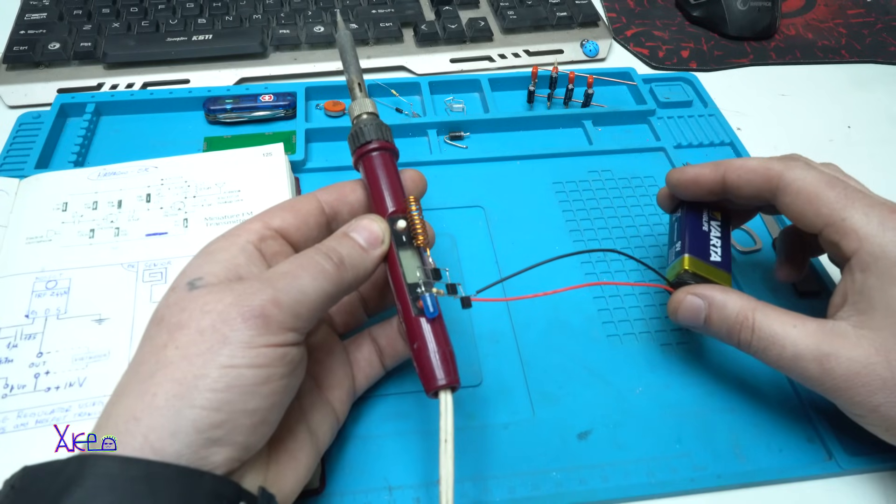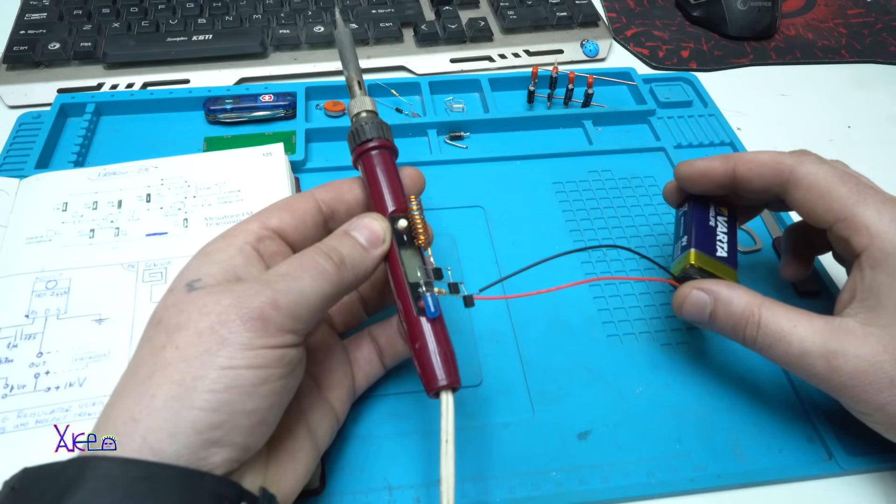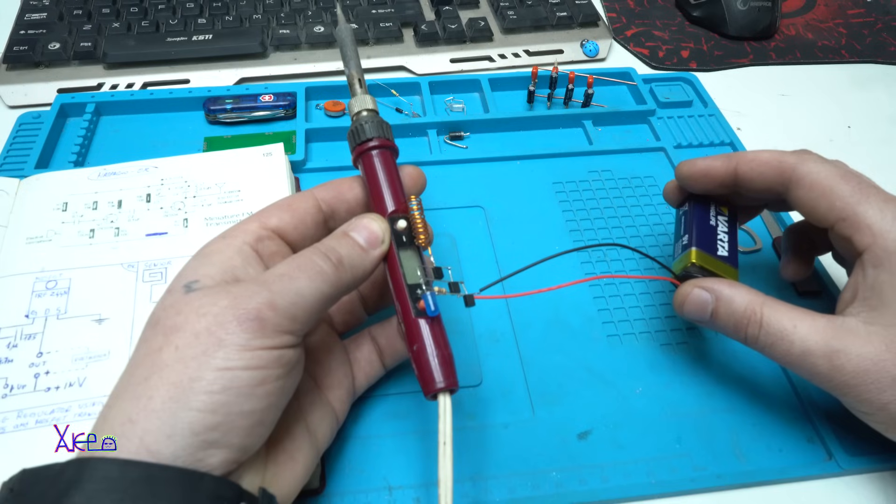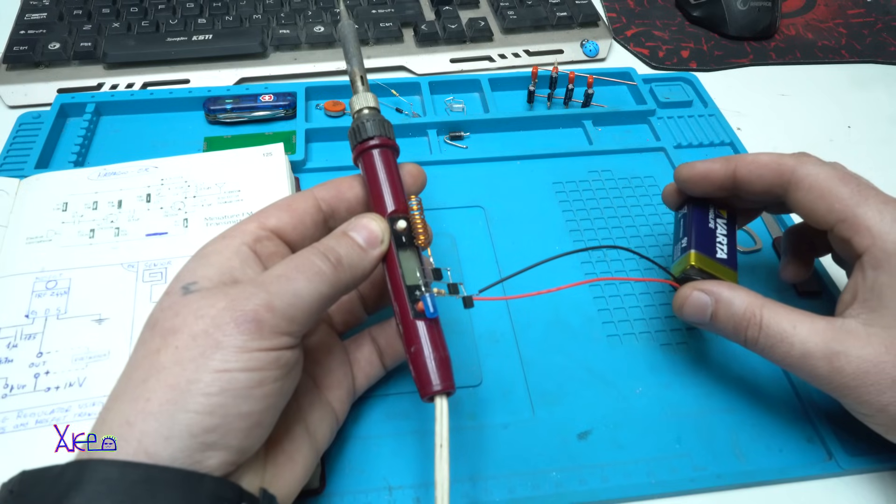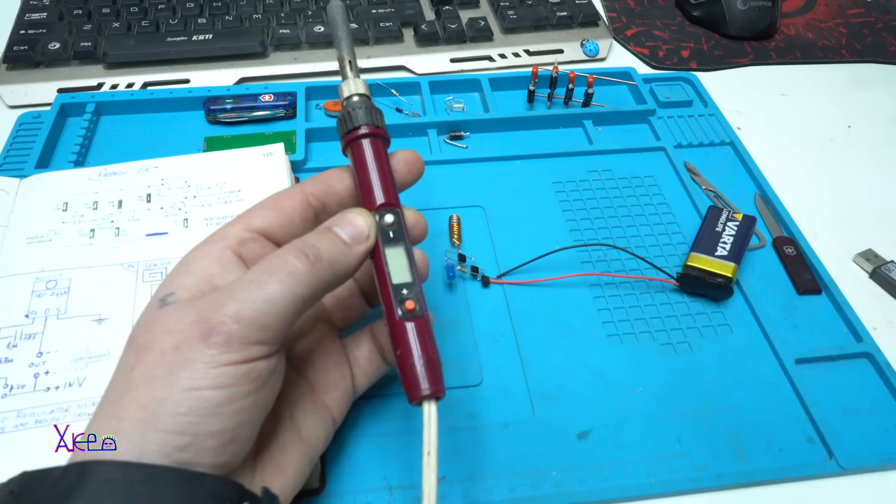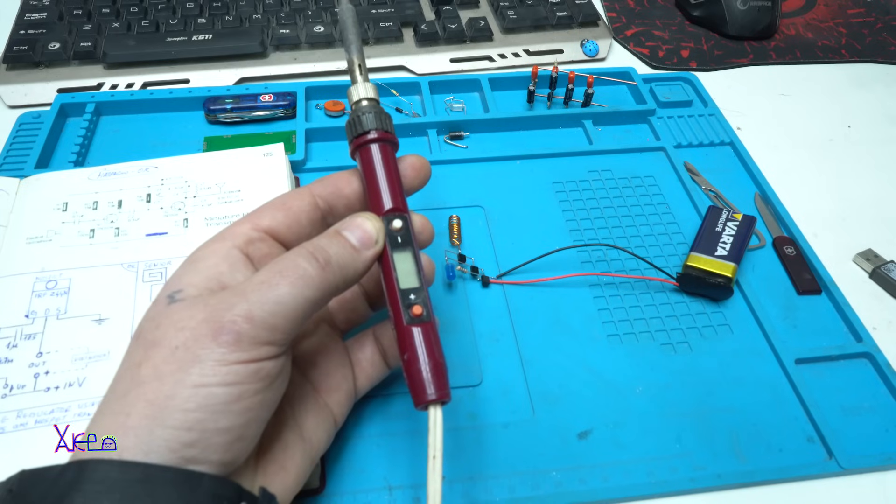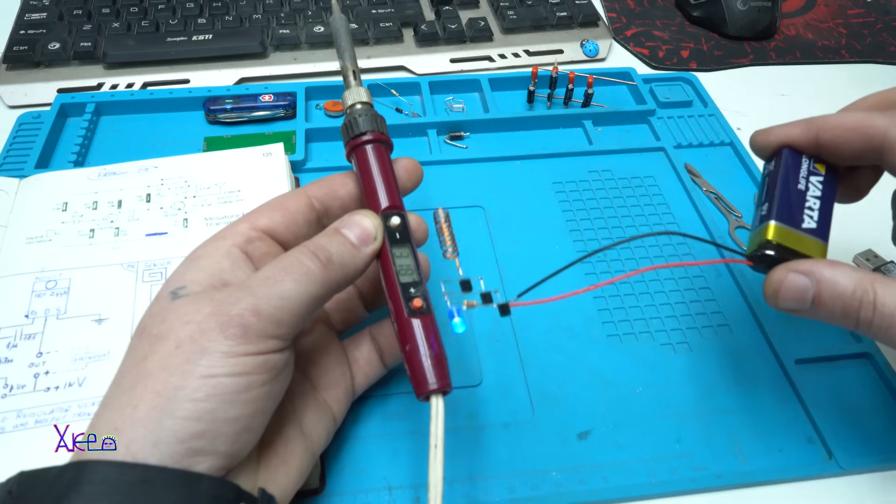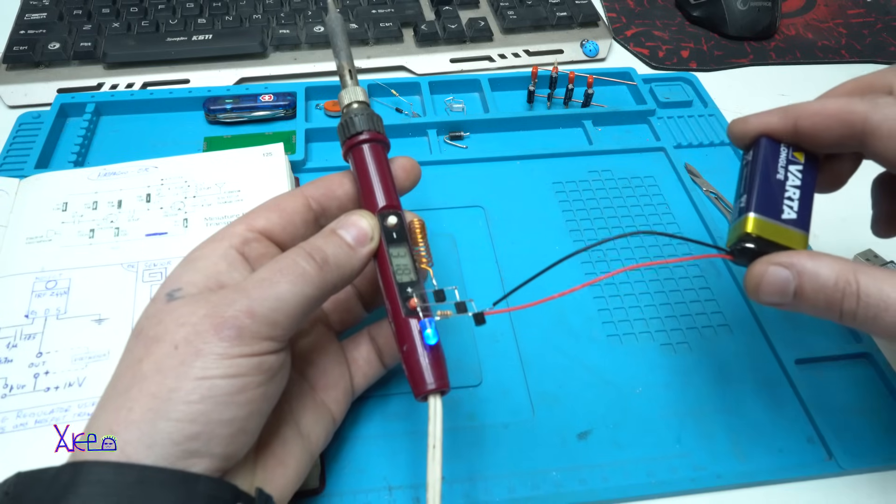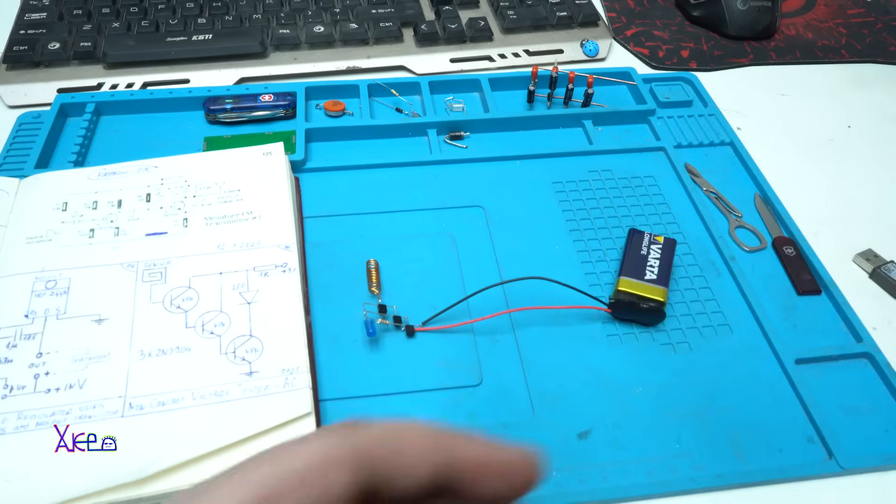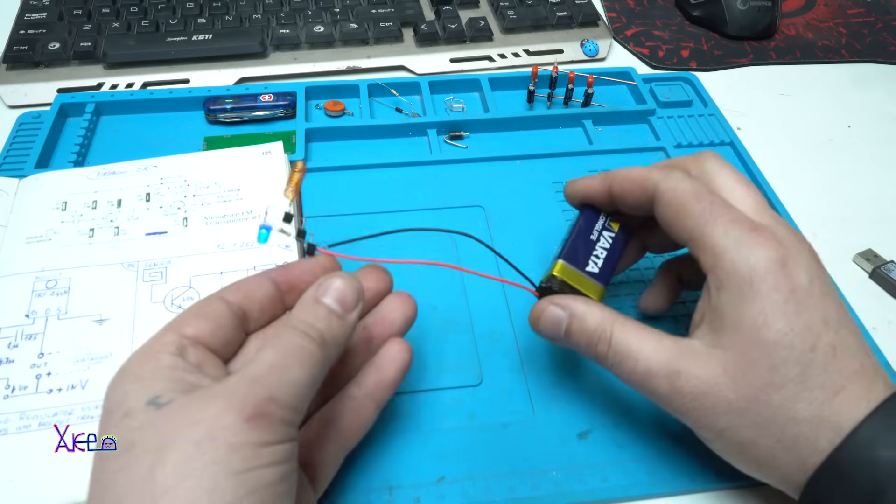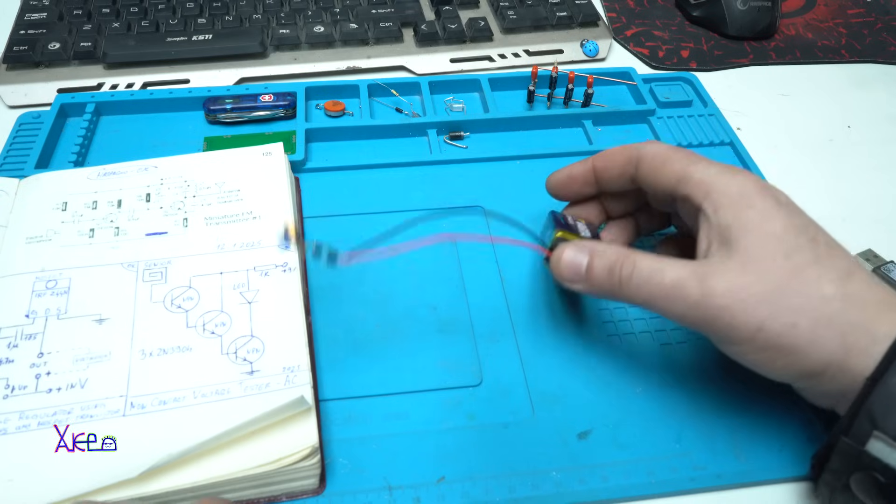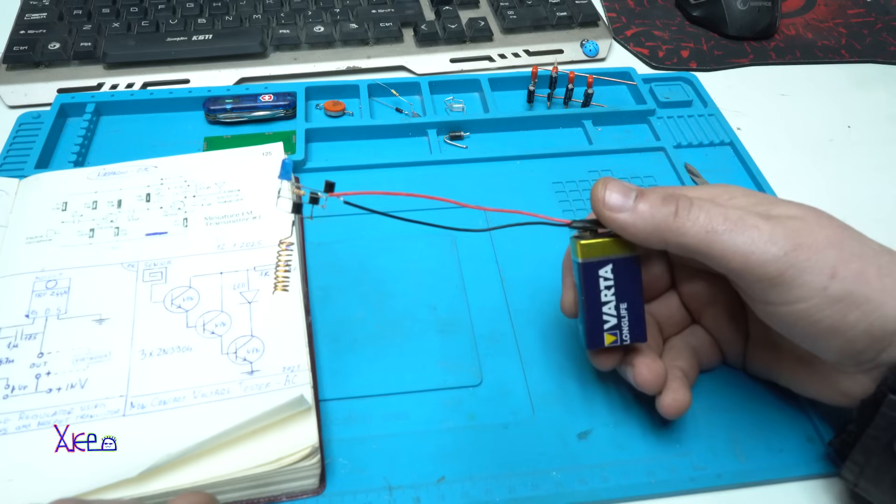The soldering iron is not turned on, so the detector doesn't pick up any AC voltage. Now I'm gonna turn it on. Yep, working fine. Okay, I hope you liked today's presentation of how to make...